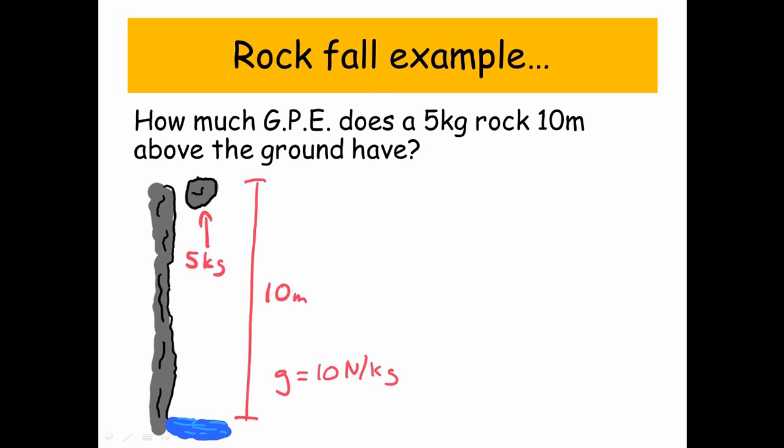And don't forget we're going to use g, the gravitational acceleration, which is 10 newtons per kilogram. So our formula to work out gravitational potential energy is mass times gravity, or gravitational acceleration times by the height.